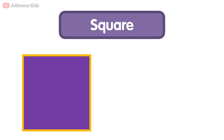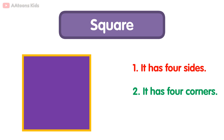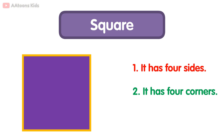Square. It has four sides: one, two, three, four. It has four corners: one, two, three, four. All sides are equal.